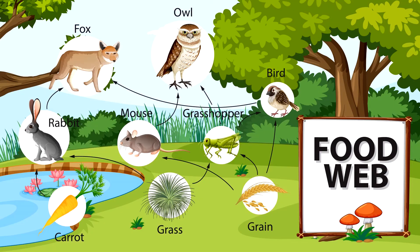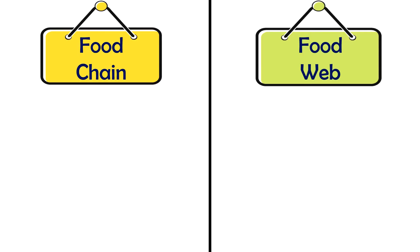Whereas in the food web, the members of higher trophic levels depend on or feed upon many different types of organisms present in the lower trophic level. One trophic level never completely relies on a single species for food. Thus, if any one species is removed from the food web, it would not bother the energy flow among the other trophic levels.